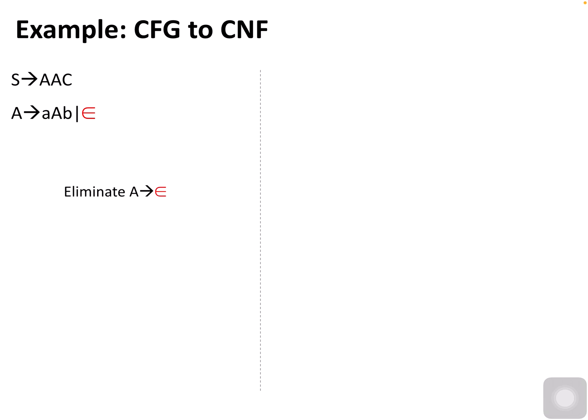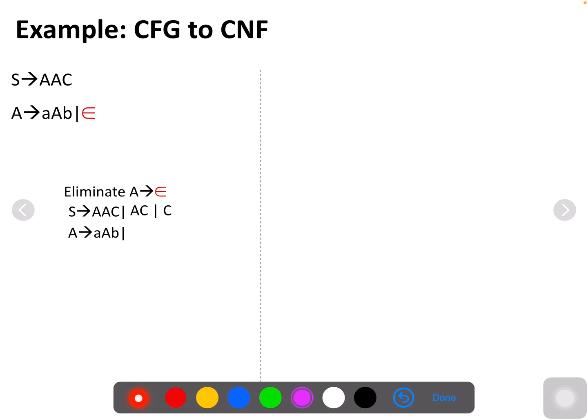For our CFG to CNF example: S gives AAB, A gives AA, B, or epsilon. First, eliminate epsilon — eliminate A gives epsilon. So we have to follow the format here. This is not in CNF form yet, so you have to convert it step by step. The first important step is epsilon elimination.